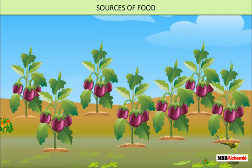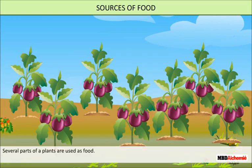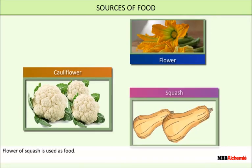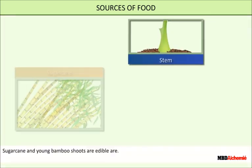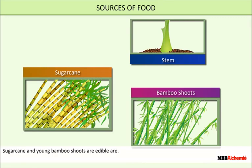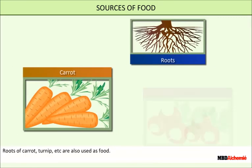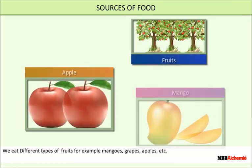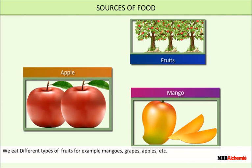Plants are the main source of food and several parts of the plant are used as food. Sugar canes and young bamboo shoots are edible. Roots of carrot, turnip, etc. are also used as food. We eat different types of fruits, for example mango, grapes, apple, etc.